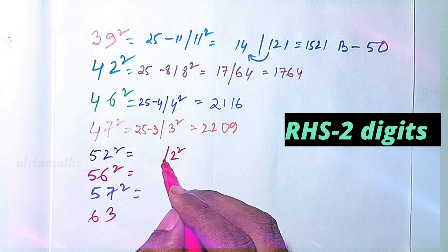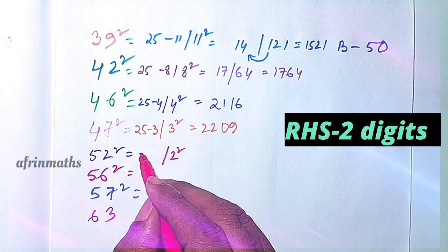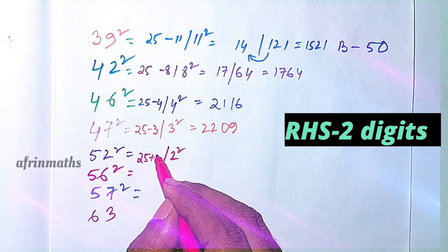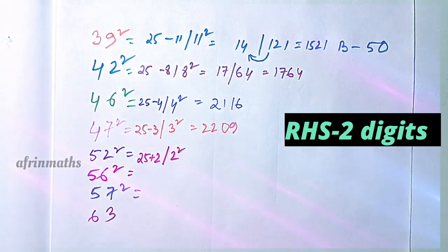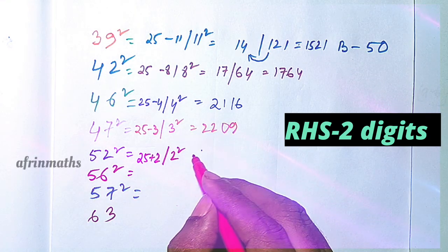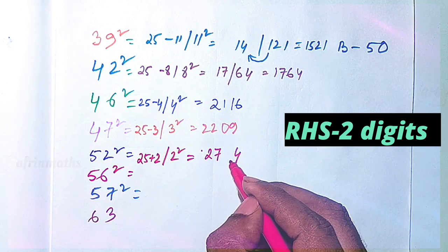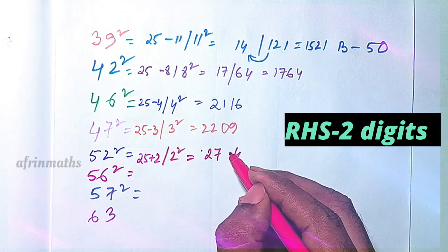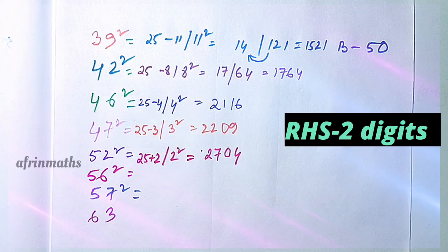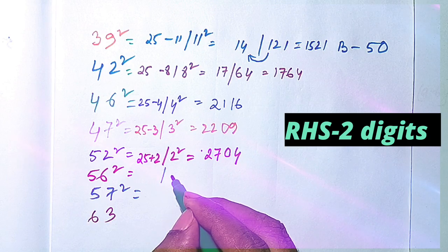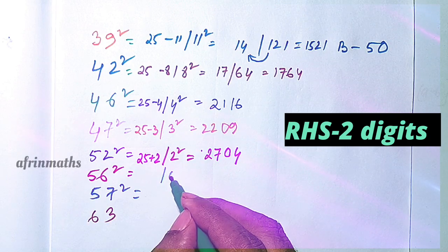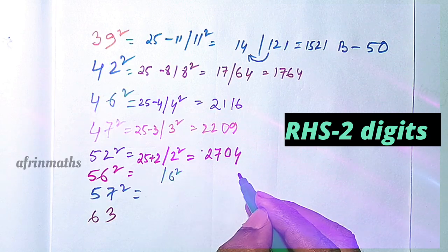52 squared — it is 2 more than 50, so when it is more than 50 we add. 2 squared is 4, and 25 plus 2 is 27. Since we write two digits for the right part, the answer is 2704.